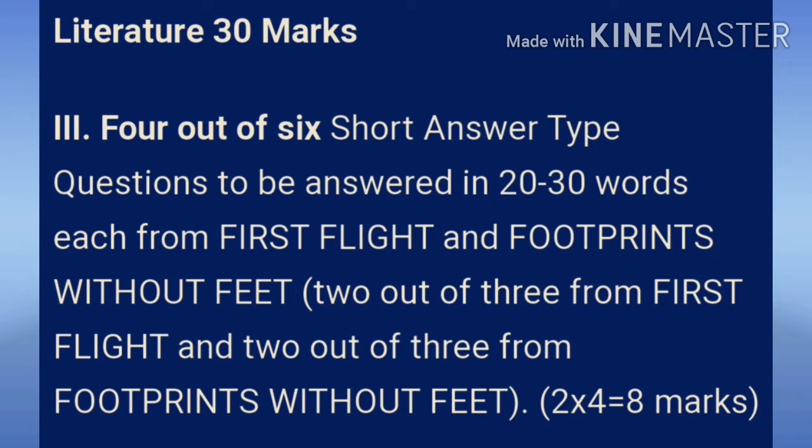For literature, four out of six short answer type questions are to be answered in 20-30 words, from both First Flight and Footprints Without Feet. Total six questions will be given and you write only four. It is compulsory to attempt two questions from First Flight and two from Footprints Without Feet — you are not supposed to write three questions from the same textbook. Two marks each question.